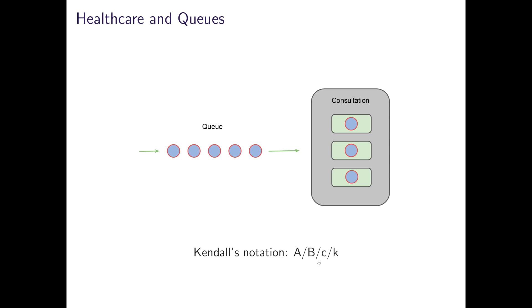Then we have B, which is just like A, but describes the service time. So for how long, for example, would a consultant spend with a patient? Then C is the number of servers. Here we have three in the example. And K is the buffer size, which is the number of patients allowed in the system. That is the sum of the servers plus the number of patients that may queue.